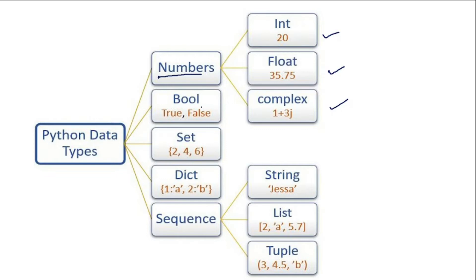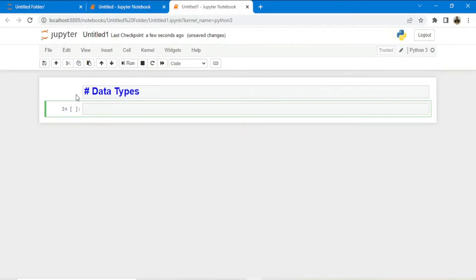We also have the bool or boolean data type which consists of two values: true and false. Then we have sets, dictionary, and sequences. Under sequences we have string, lists, and tuples. In this video we'll be dealing only with the basic data types — integer, float, complex, string, and boolean. Sets, dictionary, lists, and tuples will be covered in upcoming videos.